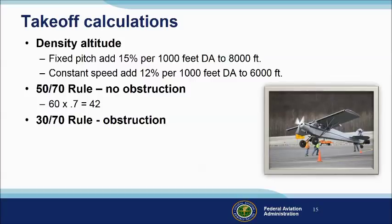Here are some rules of thumb for takeoff calculations. If you have a fixed pitch prop, add 15% to your calculated takeoff distance for each 1,000-foot increase in density altitude up to 8,000 feet. For constant speed props, add 12% per 1,000 feet of density altitude up to 6,000 feet. When planning a takeoff from short, unobstructed runways, establish a landmark at 50% of your calculated takeoff distance — you should have 70% of your rotation speed at that point. If you don't, abort the takeoff and reduce weight or wait for more favorable conditions. If you must clear obstructions on takeoff, you'll need 70% of your rotation speed by the time you've traveled 30% of your available takeoff distance.